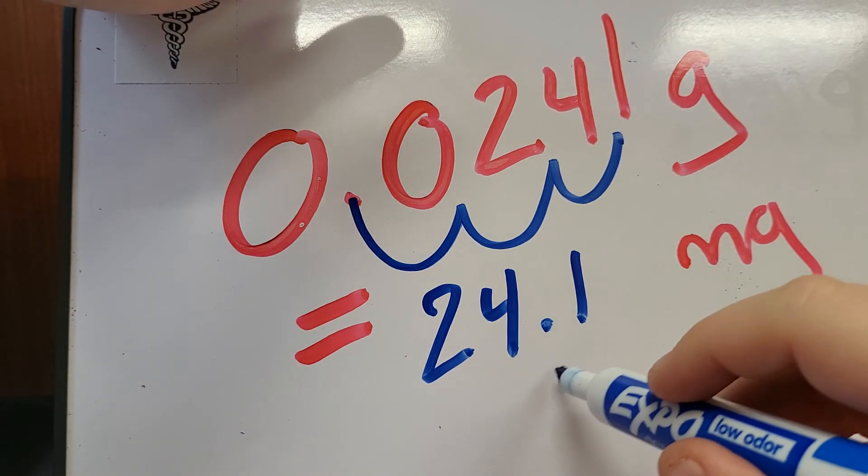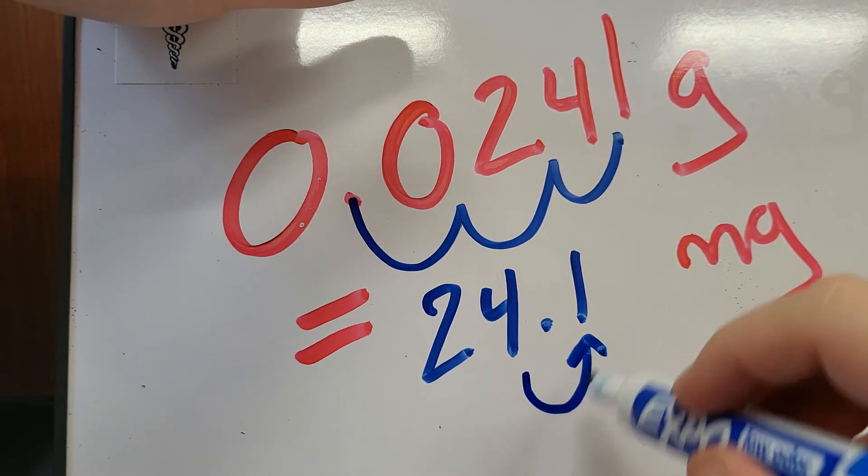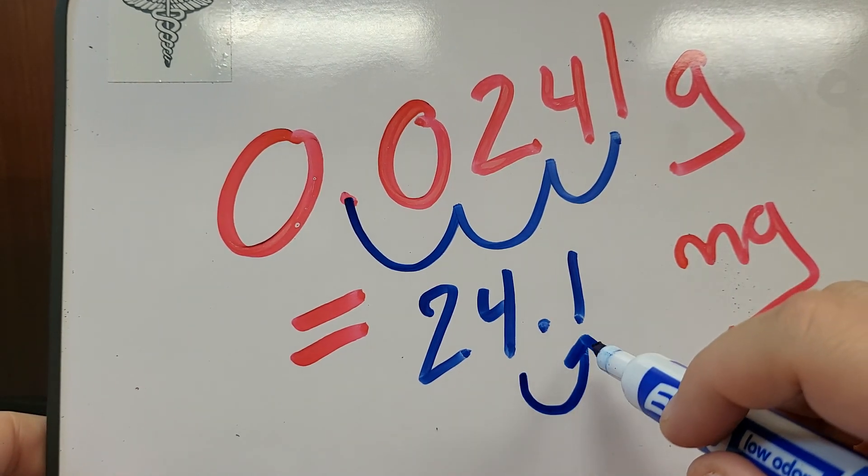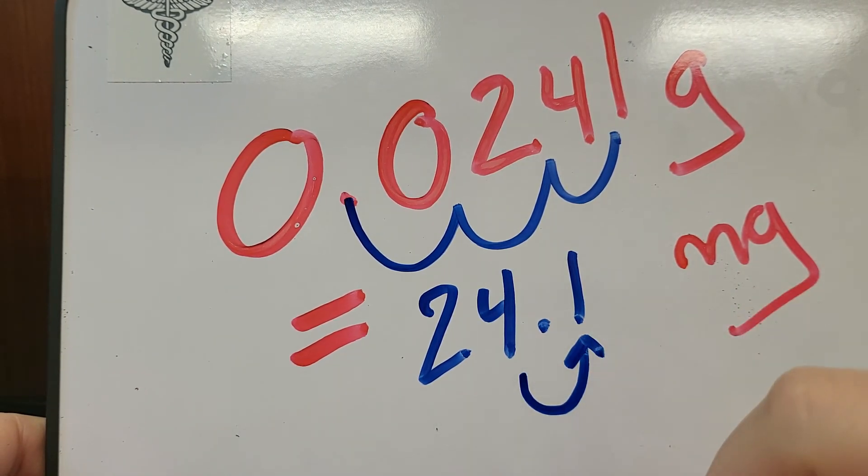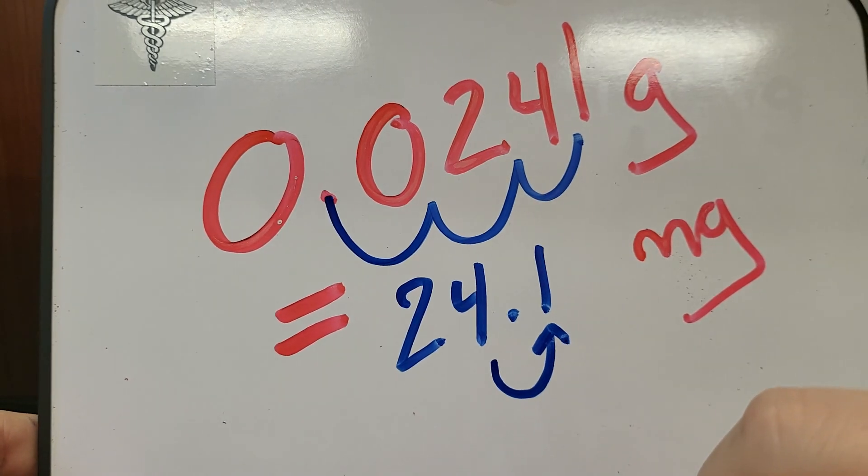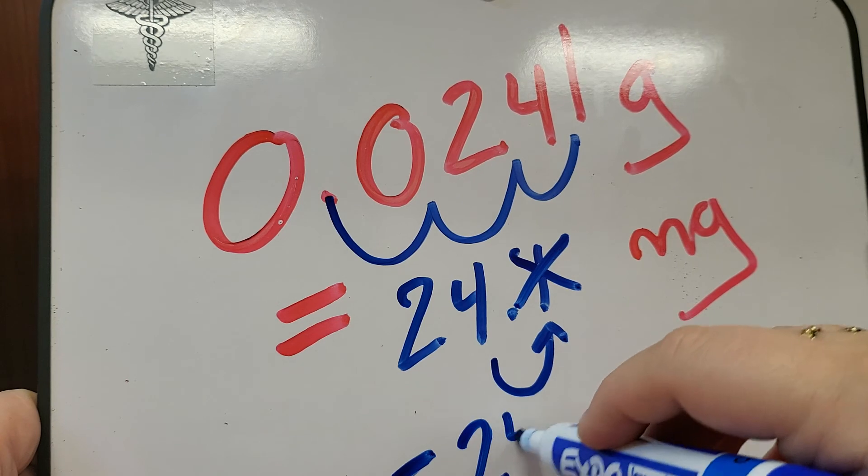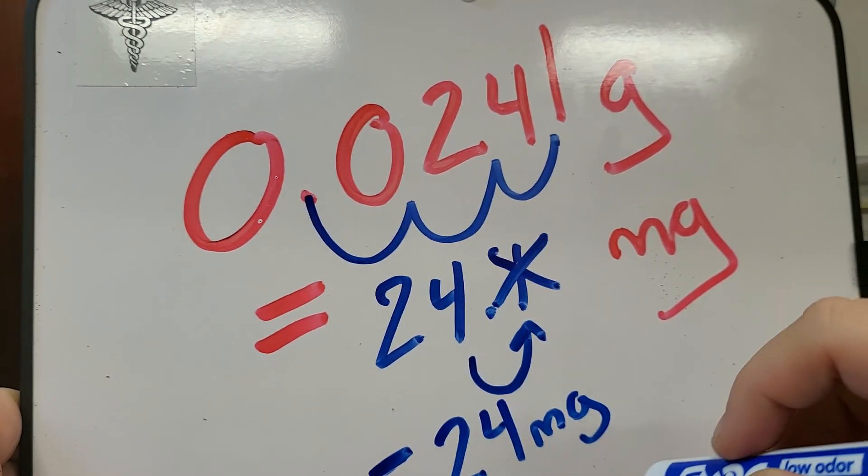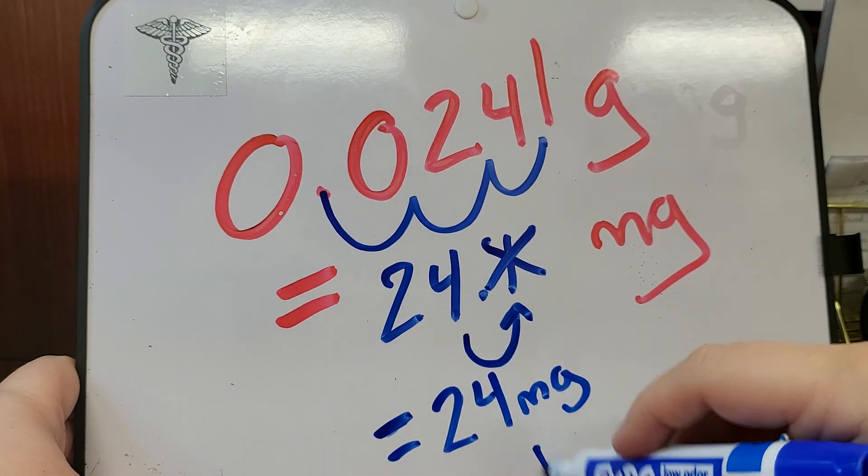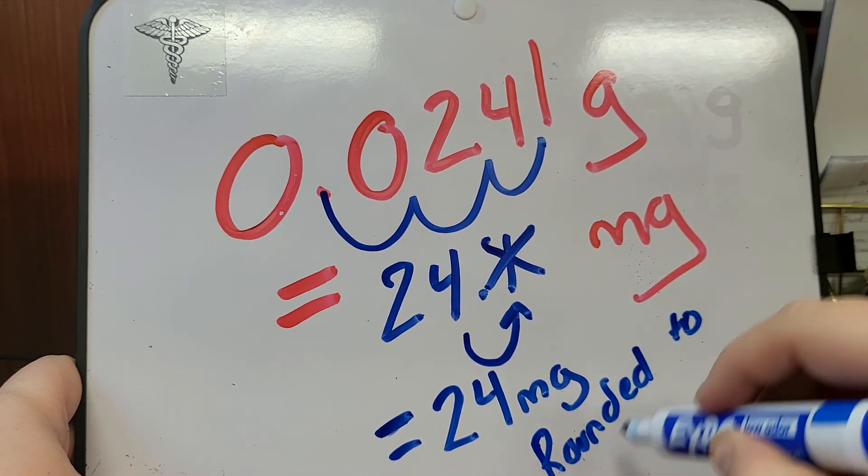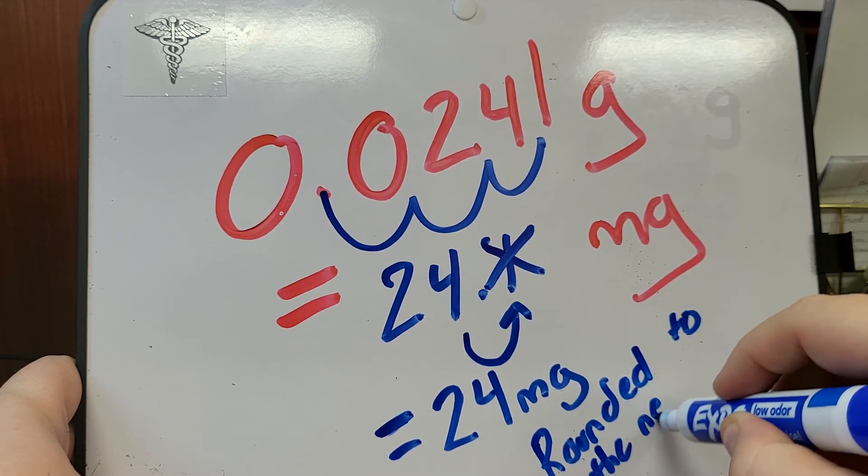Nearest whole number. You need to look at your friend to the right, okay? Which is in the tenth spot. Is it five or greater? Nope, it's not. So the answer is 24 milligrams because you rounded to the nearest whole number.